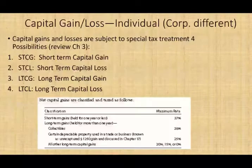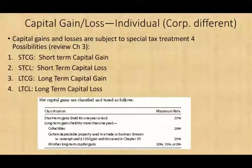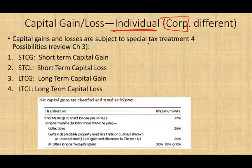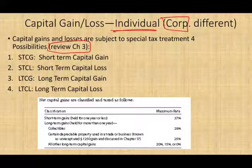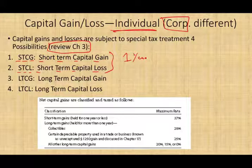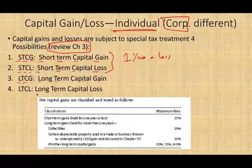When you sell a capital asset — and we're talking about individuals, not corporations, because corporations have different rules — capital gains and capital losses are subject to special tax treatment. There are four possibilities: short-term capital gain, short-term capital loss, long-term capital gain, or long-term capital loss. Short-term means you held the asset for one full year or less.